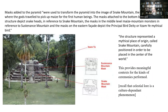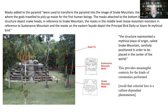The Maya E-group was not built to learn anything new about astronomy. This was taking astronomical and cosmological principles from their worldview and codifying them in stone. He talks about how their cosmology was incorporated into the E-group — the masks of Itzamna placed on the western pyramid, images of snake mountain and sustenance mountain, which marked this pyramid as an axis mundi, the center of the world.